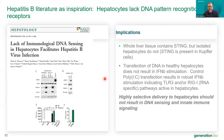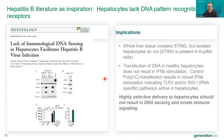This led us to the hypothesis that if we could selectively deliver DNA to hepatocytes while avoiding immune cells, we could significantly reduce innate immune stimulation. That's the intersection between delivery and innate immunity for DNA — we set out to create a more exquisitely selective delivery system for our DNA cargo.